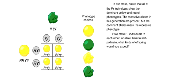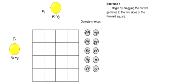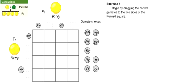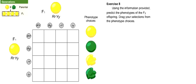In our cross, notice that all of the F1 individuals show the dominant yellow and round phenotypes. The recessive alleles in this generation are present, but the dominant alleles mask the recessive phenotype. If we mate F1 individuals to each other or allow them to self-pollinate, what kinds of offspring would you expect? Begin by dragging the correct gametes to the two sides of the Punnett square. Using the information provided, predict the phenotypes of the F2 offspring. Drag your selections from the phenotype choices.